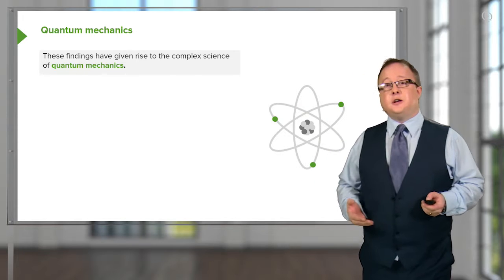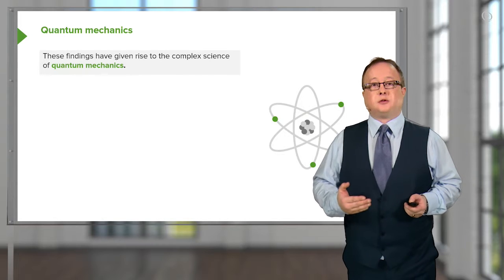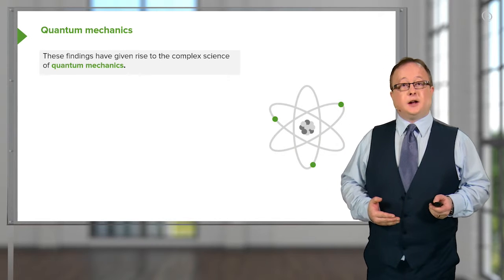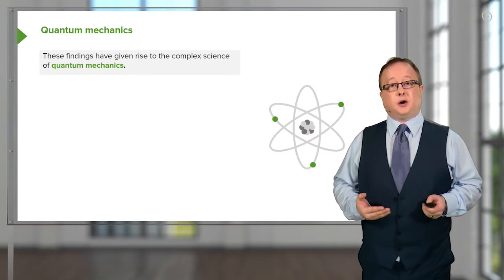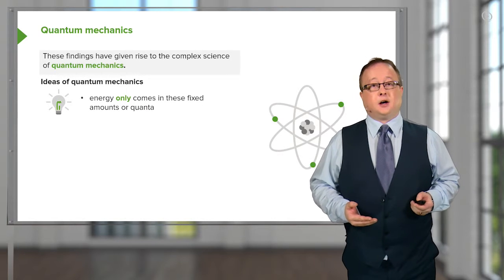The findings of Bohr have given rise to a very complex science, which we will touch upon briefly, of quantum mechanics. These were based on a lot of the work done by Schrödinger and also by Heisenberg.